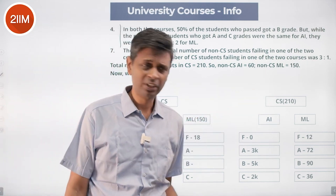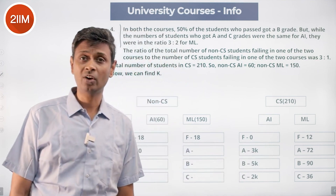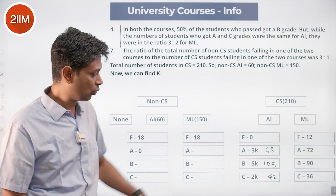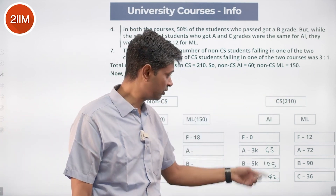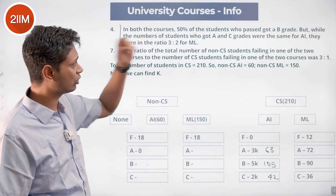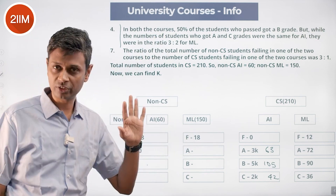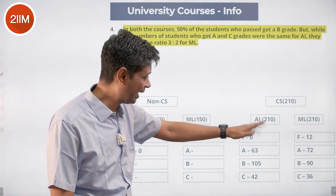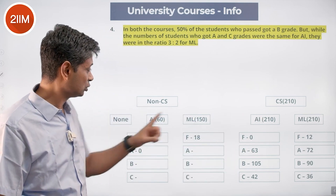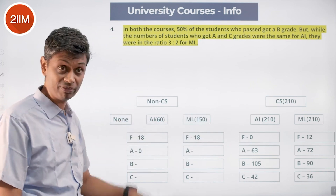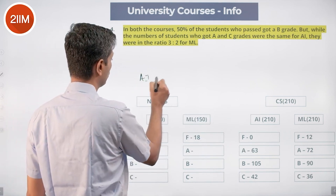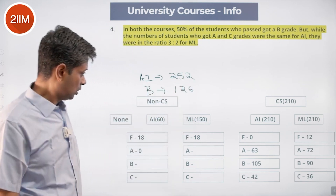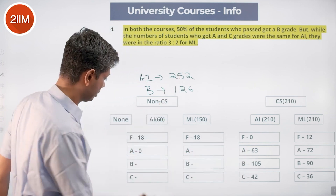Now for AI CS students: 10K = 210, so K = 21. That gives A=63, B=105, C=42 for CS in AI. For AI overall: 210 CS + 60 non-CS = 270 total students. With 18 non-CS failing in AI, total clearing AI = 252. 50% of those who passed got B, so B grade total = 126. CS already contributes 105 B grades, so non-CS B in AI = 21.